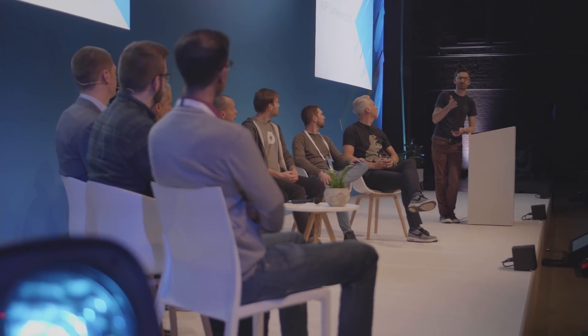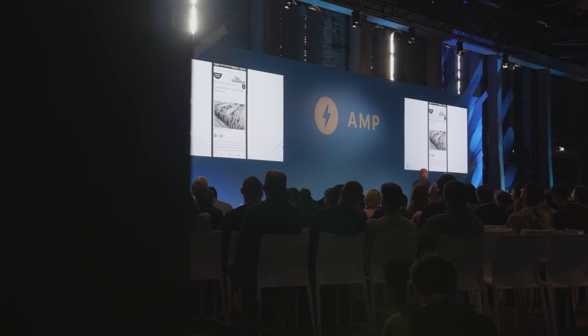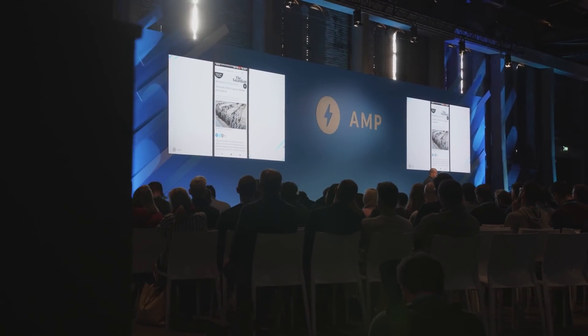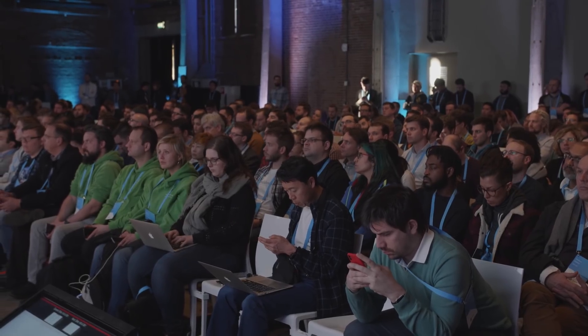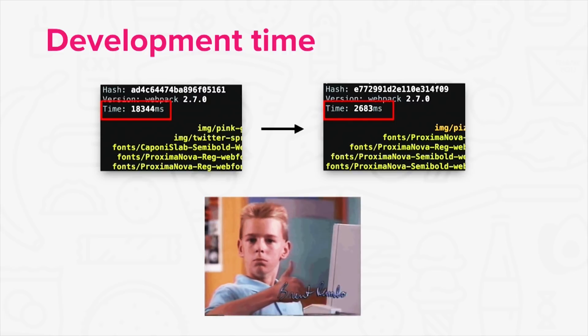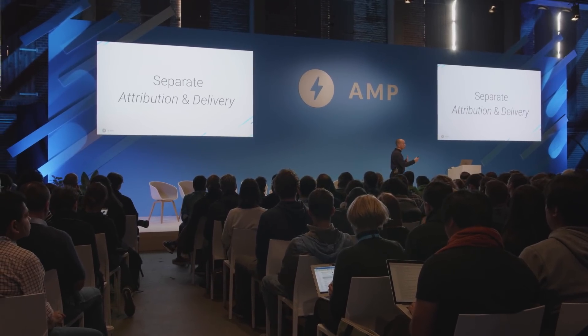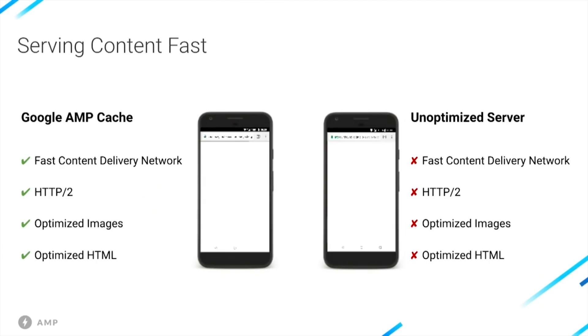Overall development time and workflow was just way easier having the full AMP site as the one source of truth for the site. Bringing it back to my time working on BuzzFeed — comparing the article pages to Tasty, the build time — we see 85% faster build time on the webpack build.